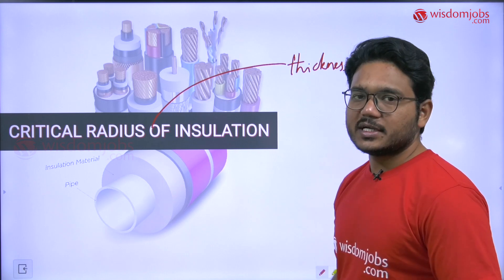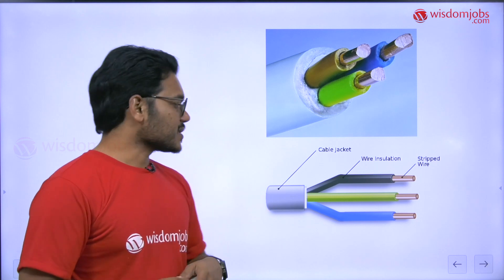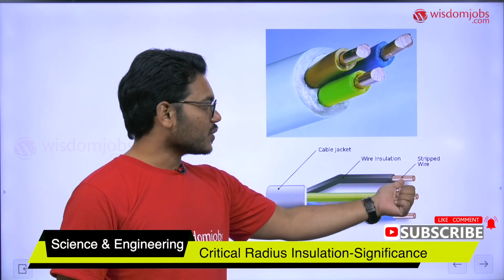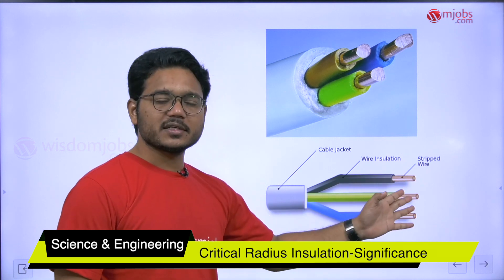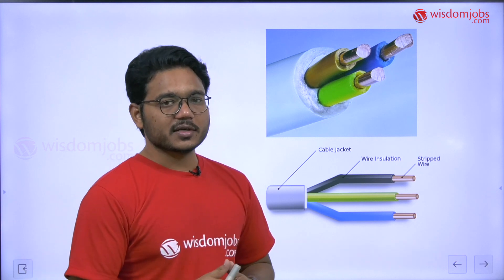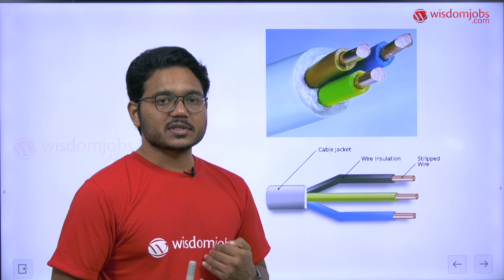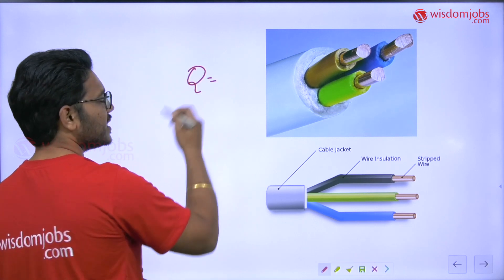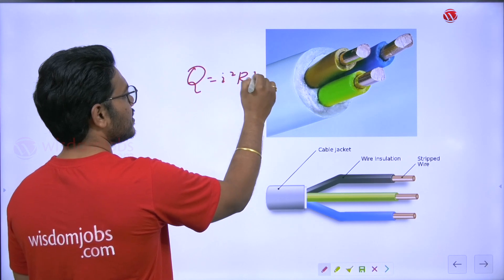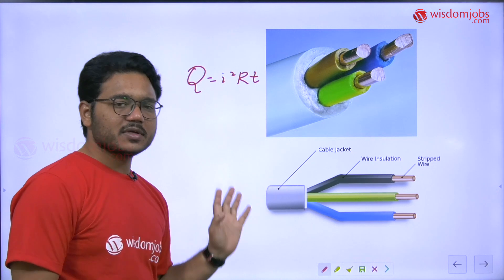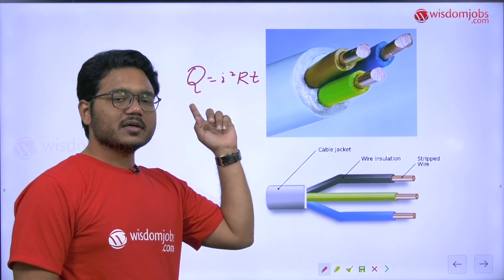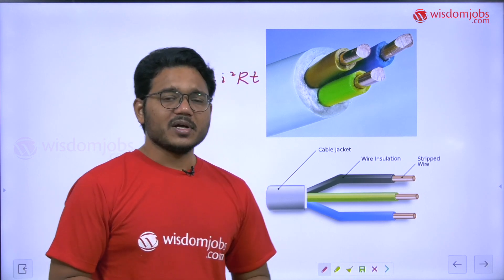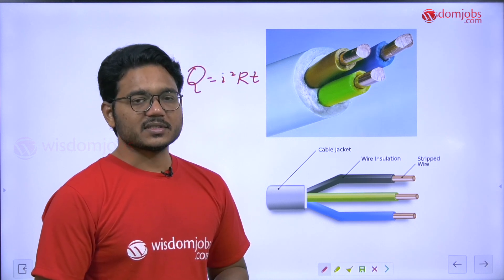Looking at this picture, you can see electrical cables. The core conductor — the bare material — is the actual conductor of electricity. Along with electricity, due to the flow of current, heat is also generated. You know the basic formula: heat generated while current is carried is I²R. Based on this, whenever an electrical conductor carries current, heat is generated — some part of the energy is liberated as heat.